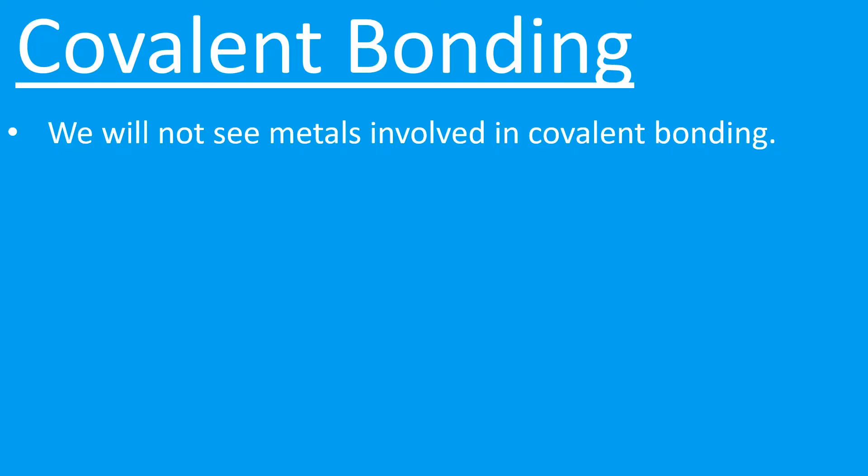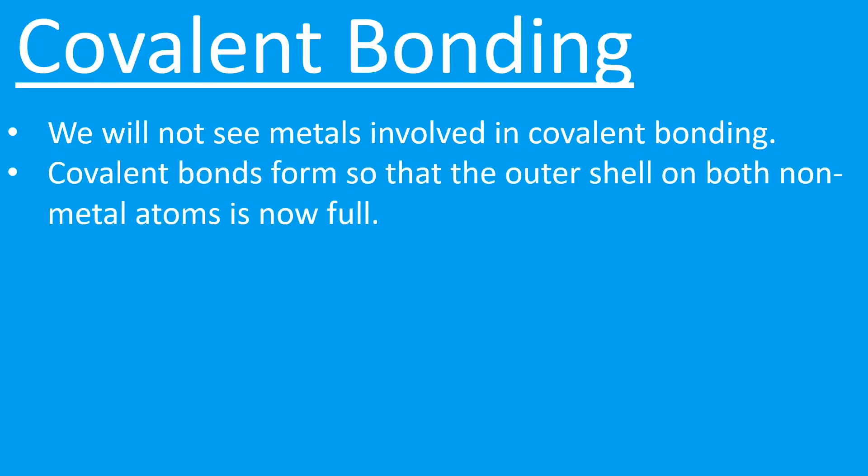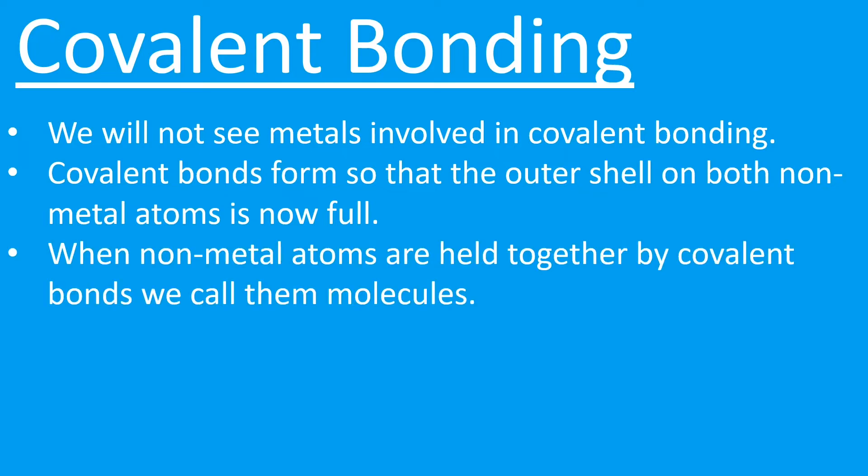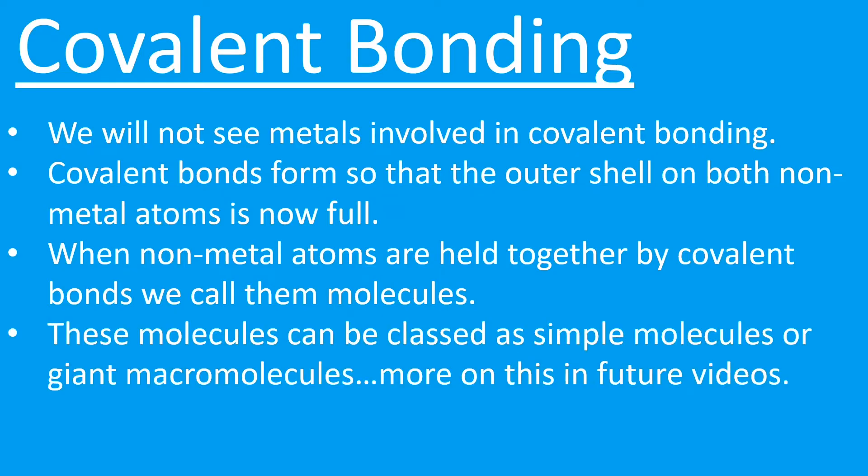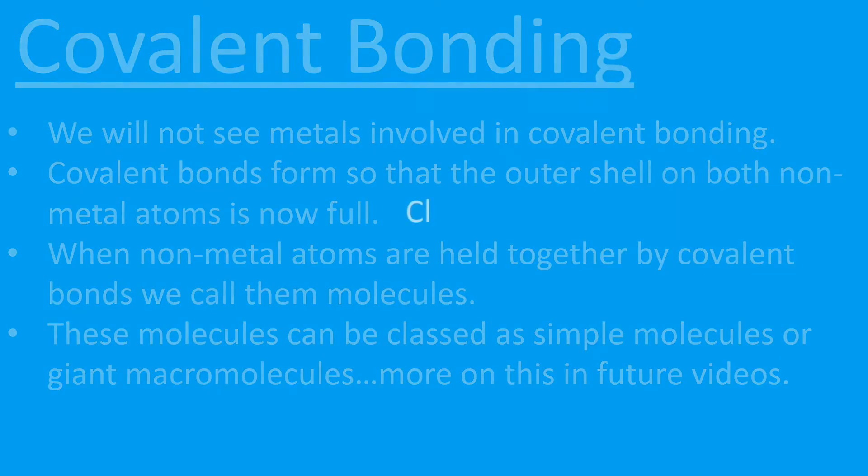When covalent bonds form, both of these non-metals—or all these non-metal atoms—must now have full outer shells. That's the goal in all bonding: to ensure that the outer shell is full. When two non-metals are bonded by a covalent bond, we call them molecules, and these molecules can either be classified as simple molecules or giant macromolecules. There'll be more of this in future videos.